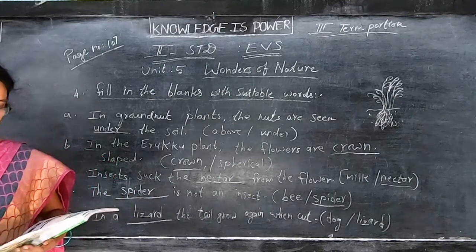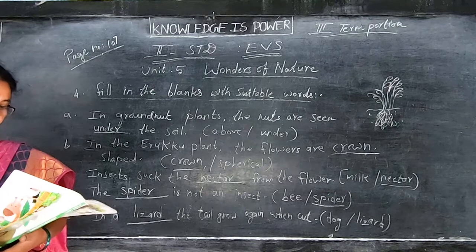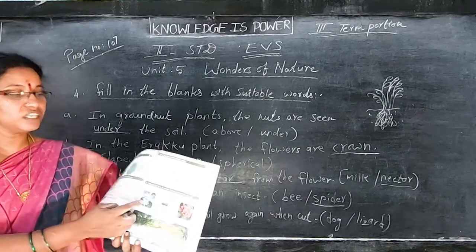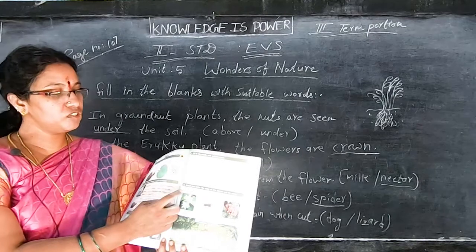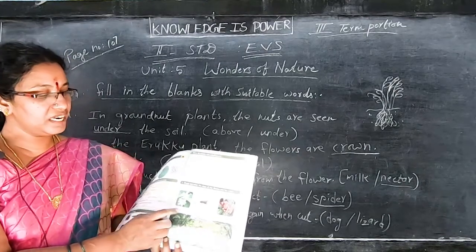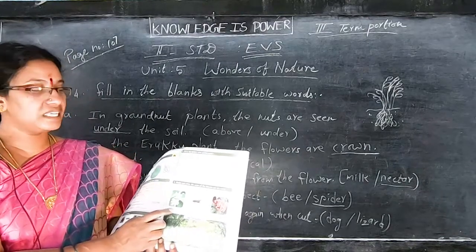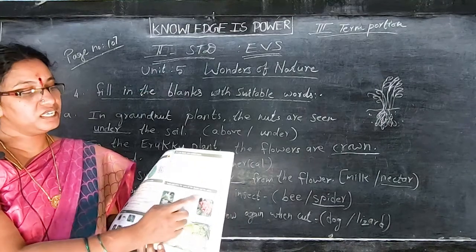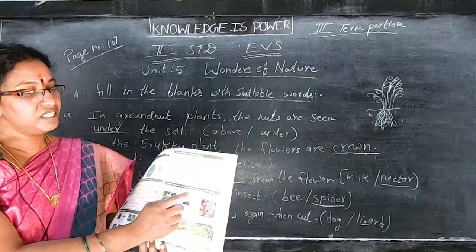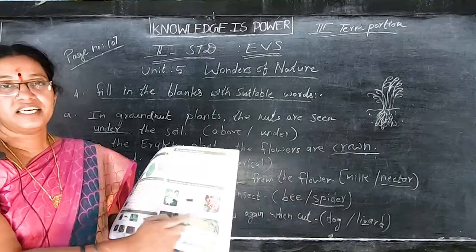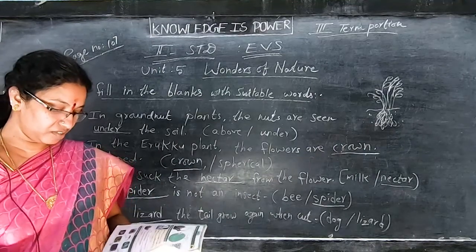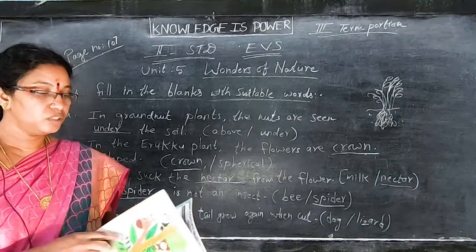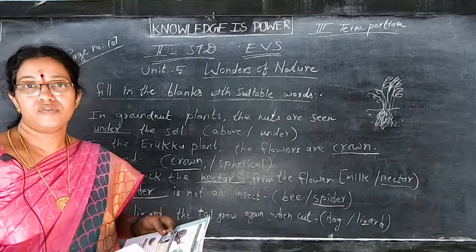Choose and write the name for the flower and the animals. What is this one? Jasmine. You want to write jasmine here. This is spider. This is jungle flame. See the spelling and write here, children. By this we are finishing this lesson — the third term portion is over.